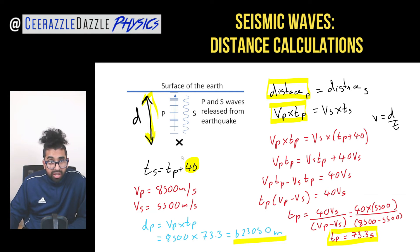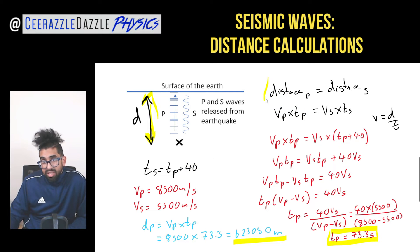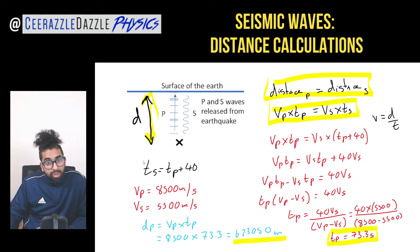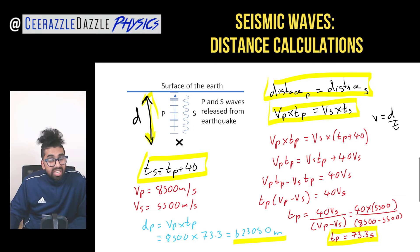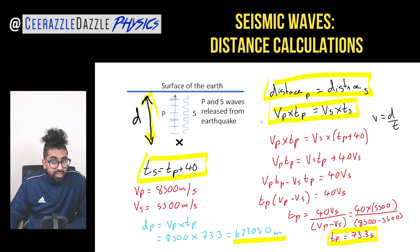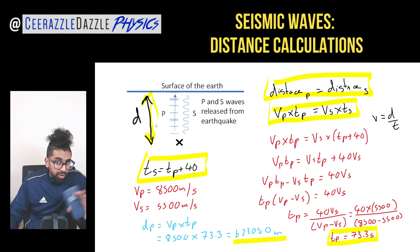Since this is a tricky concept, here's the key advice: whenever you get these questions, first write down that the distance of the P wave equals the distance of the S wave. Then construct an expression for the time of the S wave including the time interval — for example, Ts = Tp + 40. Once you have those two things, the rest is just algebra. Let's try a full exam question using all of this.